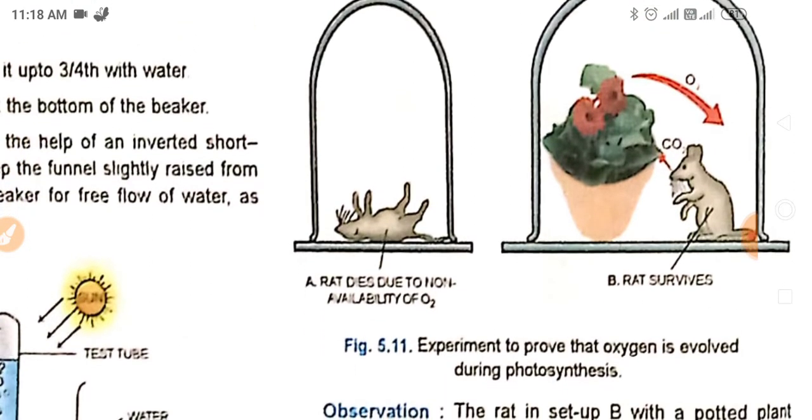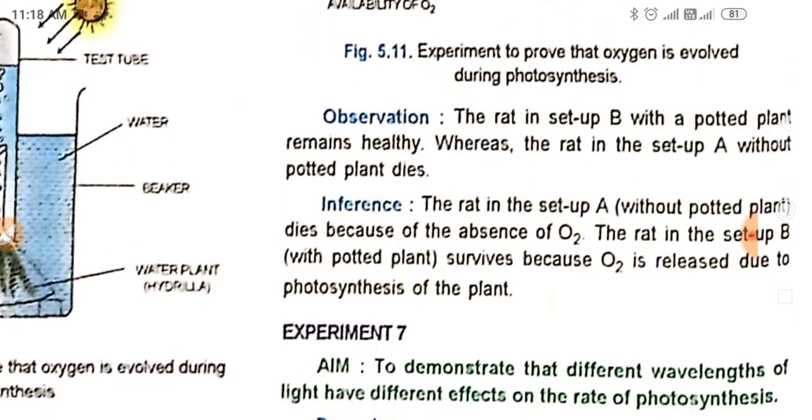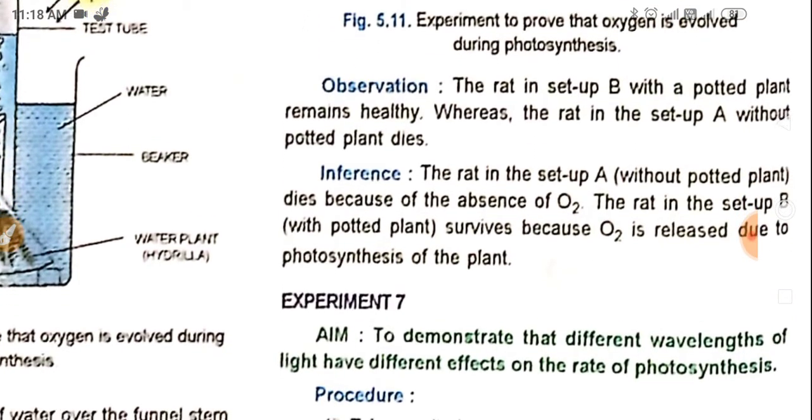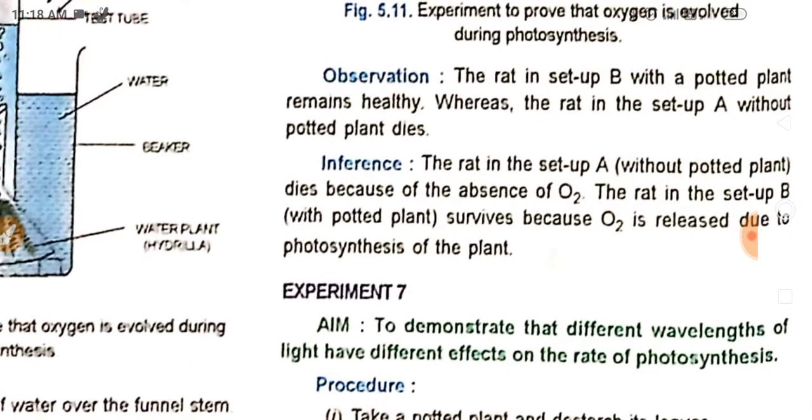What do you observe? The rat in setup B with a potted plant remains healthy, whereas the rat in setup A without a potted plant dies. The rat in setup A dies because of the absence of oxygen. The rat in setup B survives because oxygen is released due to the photosynthesis of the plant. So this is the experiment.